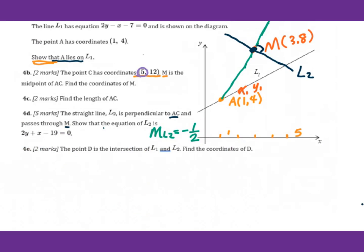This will be your answer. Let's go to 4e. The point D is the intersection of L1 and L2. Find the coordinates of D. You are given the equation for L1: 2y - x - 7 = 0. For L2: 2y + x - 19 = 0.